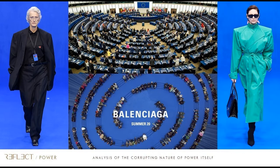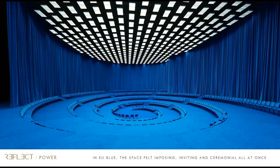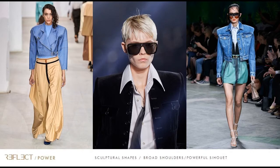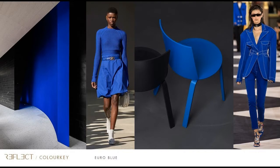One convincing collection was Balenciaga, who literally turned his catwalk into the setting of the European Parliament. Models walked with huge shoulders and passports around their necks, identity cards carried with them, almost harnessed in their clothes. You see the catwalk setting and all this euro blue color, which we will see in collections later on. Many designers have these broad shoulder silhouettes — it's a bold statement of shape.